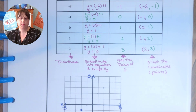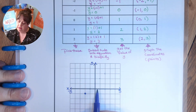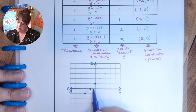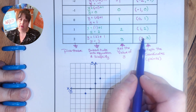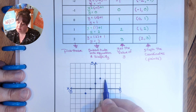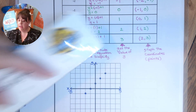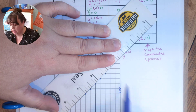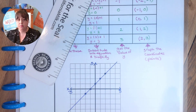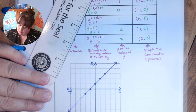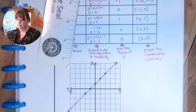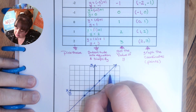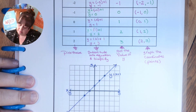Let's go ahead and graph those points. The point negative one, zero means go back one and then don't move. The point zero, one means don't move and then go up one. One, two means over one and up two. And two, three means go over two and up three. There's our line. We take our straight edge, put the pencil on a point and lean into it, going through all of the points, then put an arrow on both sides. We also want to name our line — the name of our line is the equation: y equals x plus one.